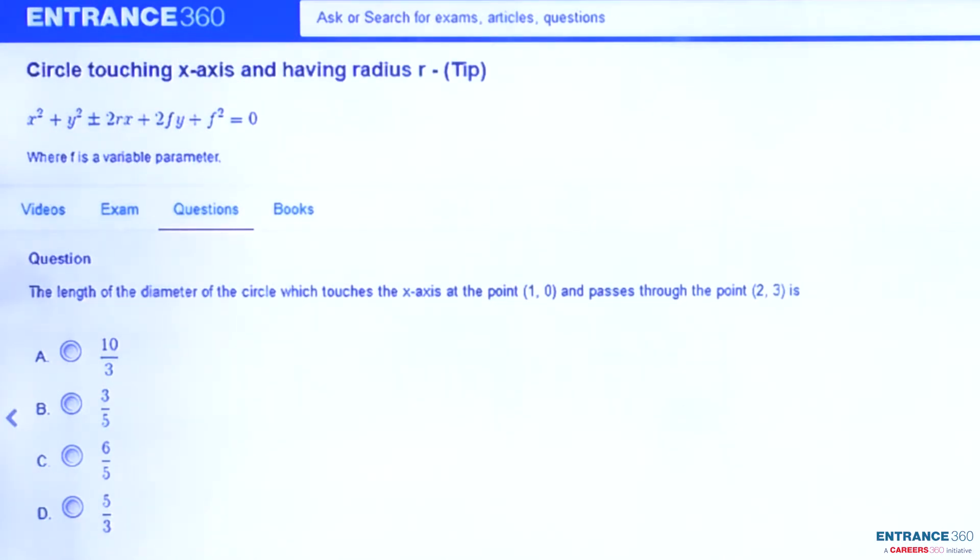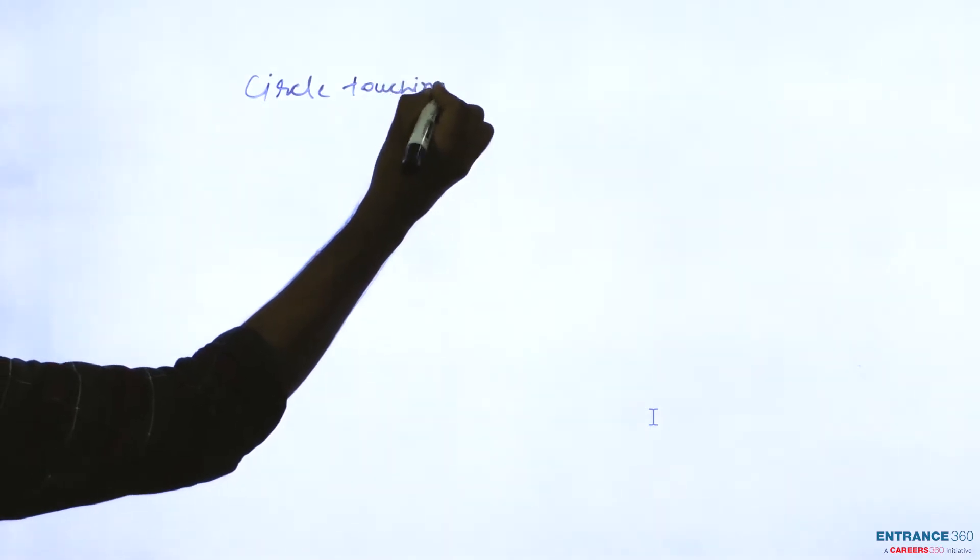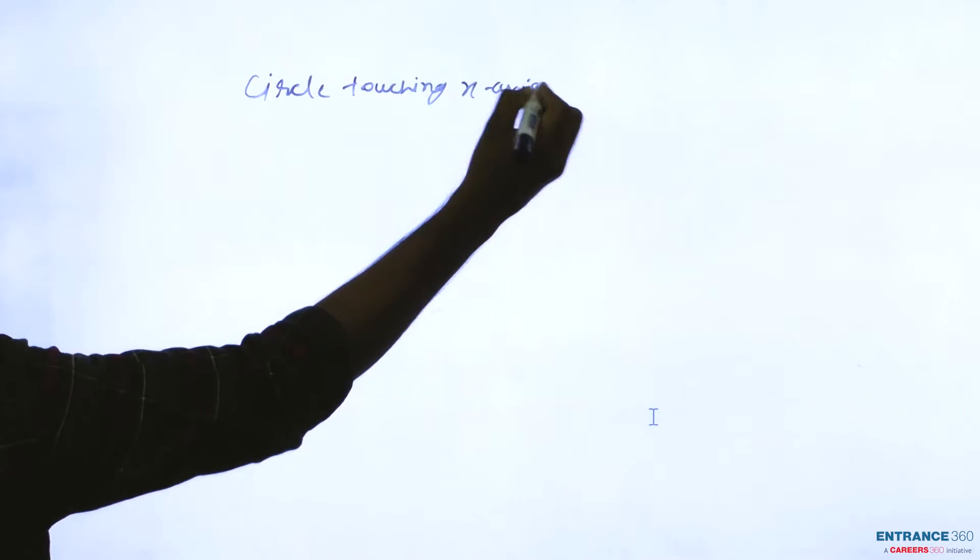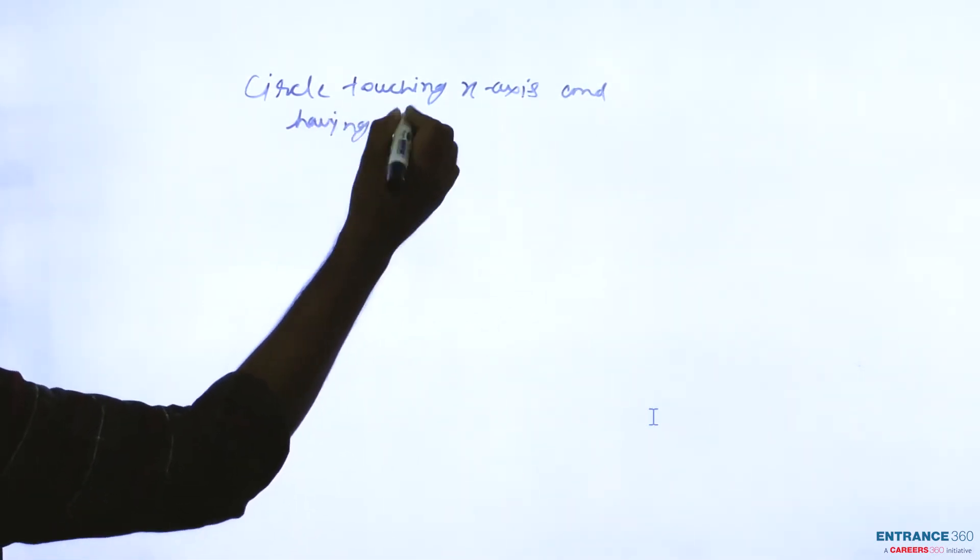First of all we have to understand the concept. What is the concept behind this question? Let's see the concept. The concept is that circle touching x-axis and having radius r.